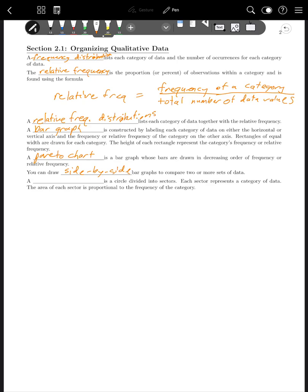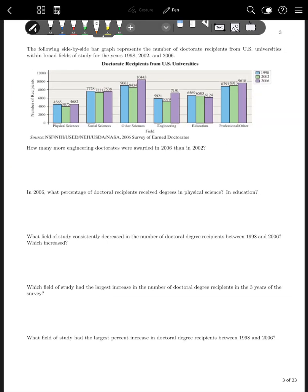You can draw side-by-side bar graphs to compare two or more sets of data. A pie chart is a circle divided into sectors. Each sector represents a category of data. The area of each sector is proportional to the frequency of the category.